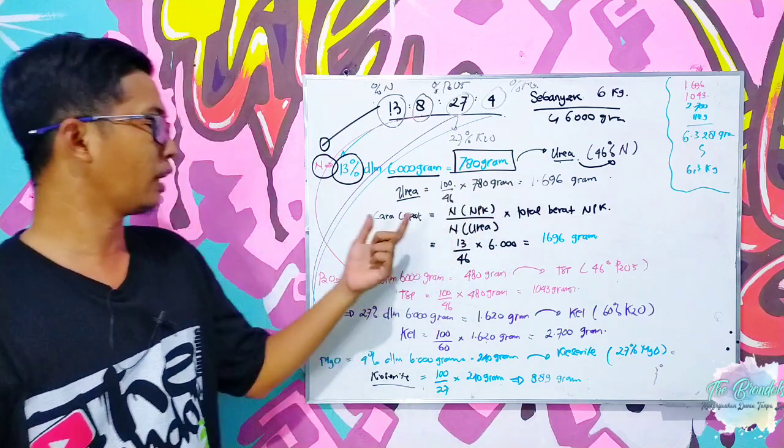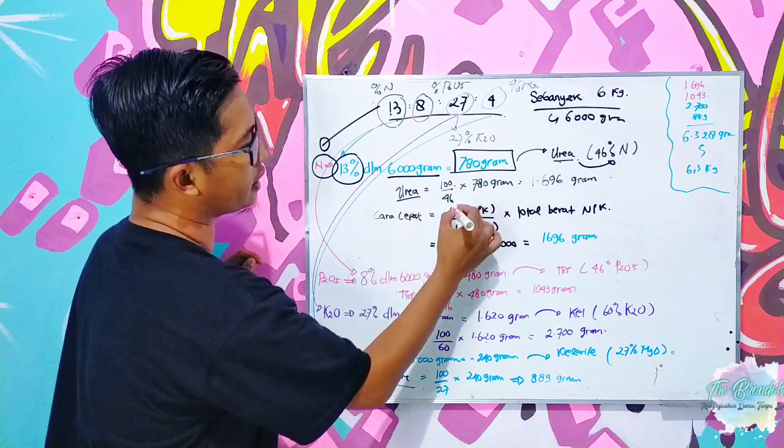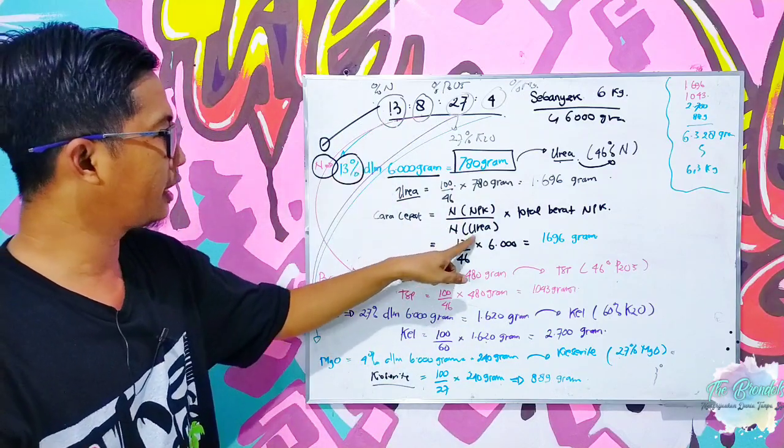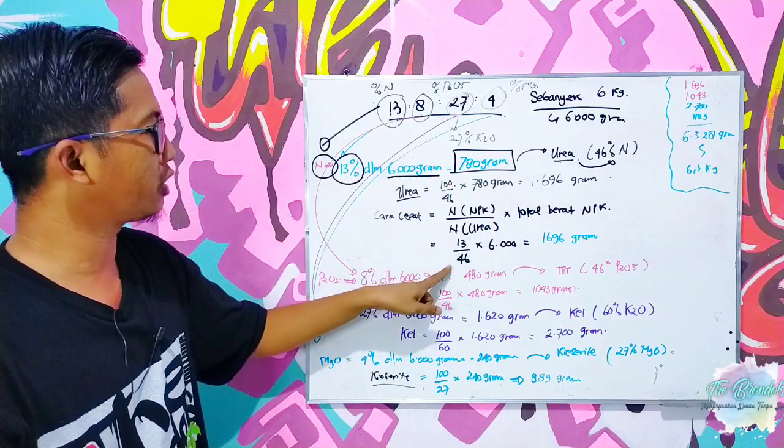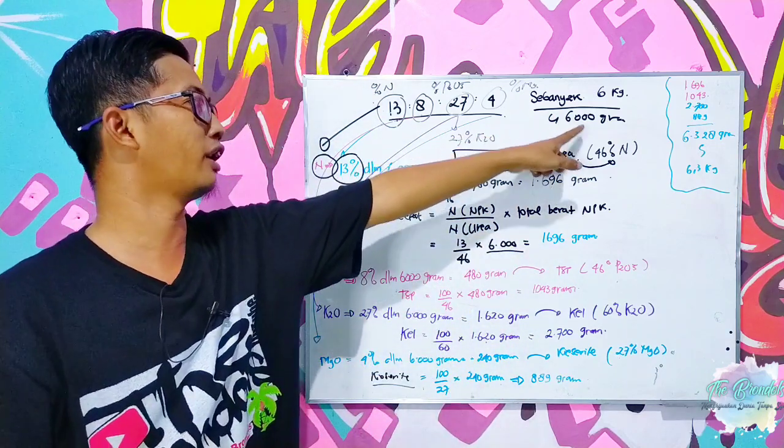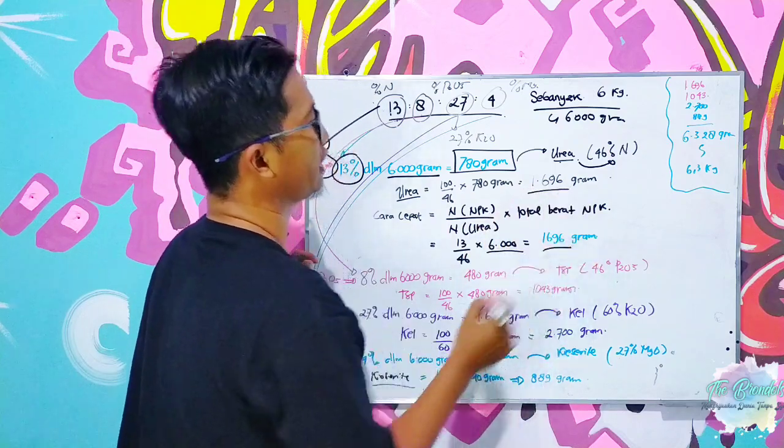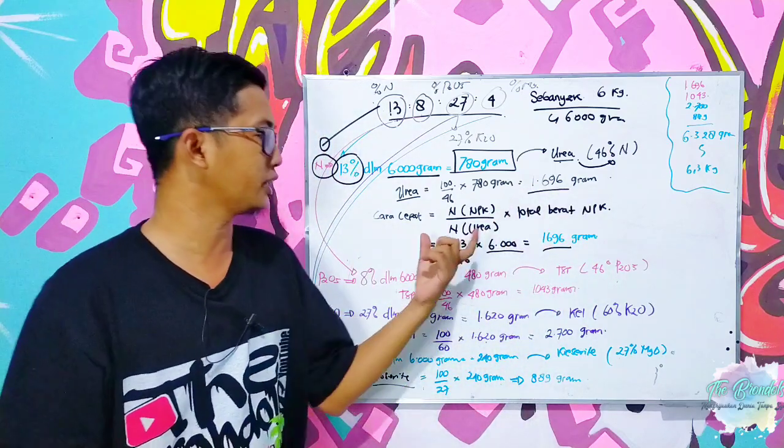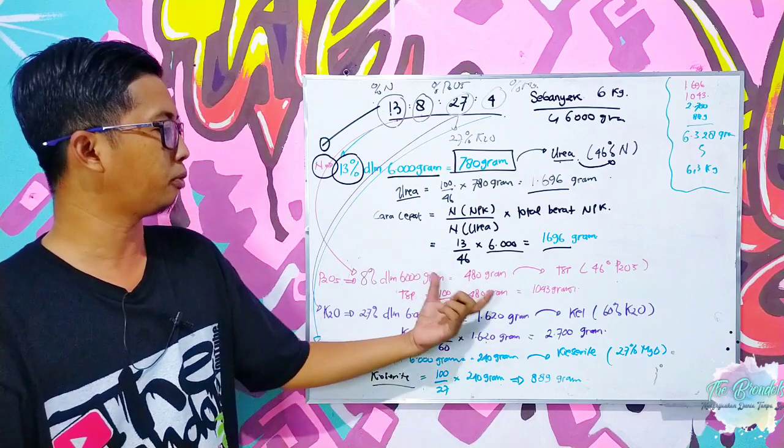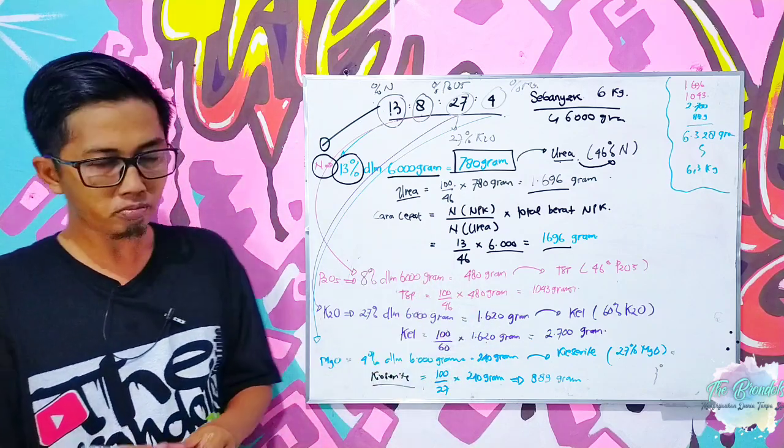Nah ini cara cepatnya adalah nitrogen pada NPK, pada NPK 13, dibagi dengan N pada urea 46, dikalikan pupuk NPK yang ada yaitu adalah 6000 gram yang itu sama dengan, jadi ini sama dengan ini. Ini adalah cara cepatnya saja yang bisa diaplikasikan pada beberapa pupuk pupuk dasar atau pupuk tunggal yang akan kita gunakan.